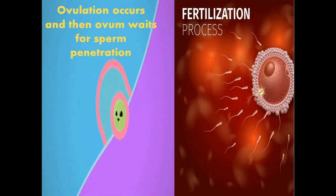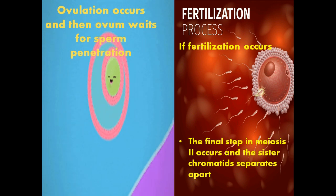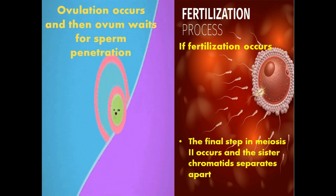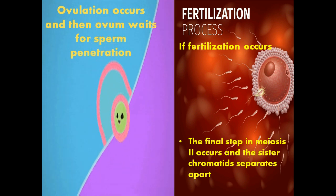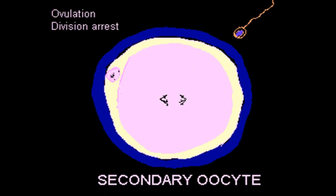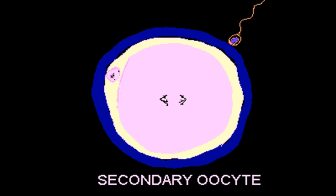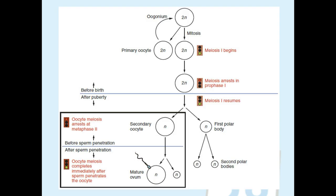Ovulation is necessary because the site of fertilization in the female reproductive tract is the infundibulum, the very first part of the fallopian tube. If fertilization occurs, the secondary oocyte that was arrested at metaphase two completes its second meiotic division. This animation is great for understanding this concept, showing the oocyte arrested at metaphase two.